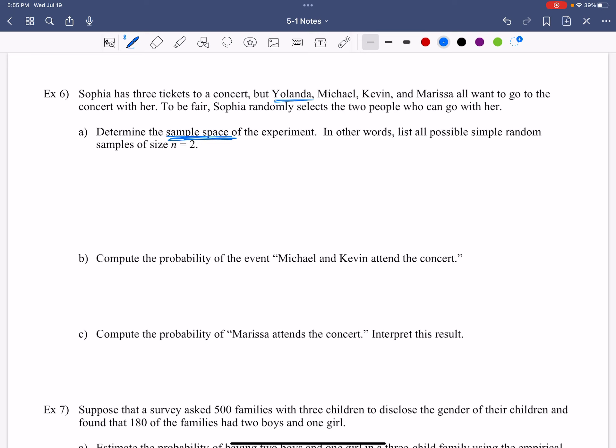So we're going to pair Yolanda up with Michael, with Kevin, with Marissa. And then we're going to systematically do this. So Yolanda with Michael, Yolanda with Kevin, and Yolanda gets paired with Marissa. Then I'm going to say, all right, what do we have Michael going here? So Michael has already been paired with Yolanda, so we don't want to do that again. But he has not been paired with Kevin or Marissa yet.